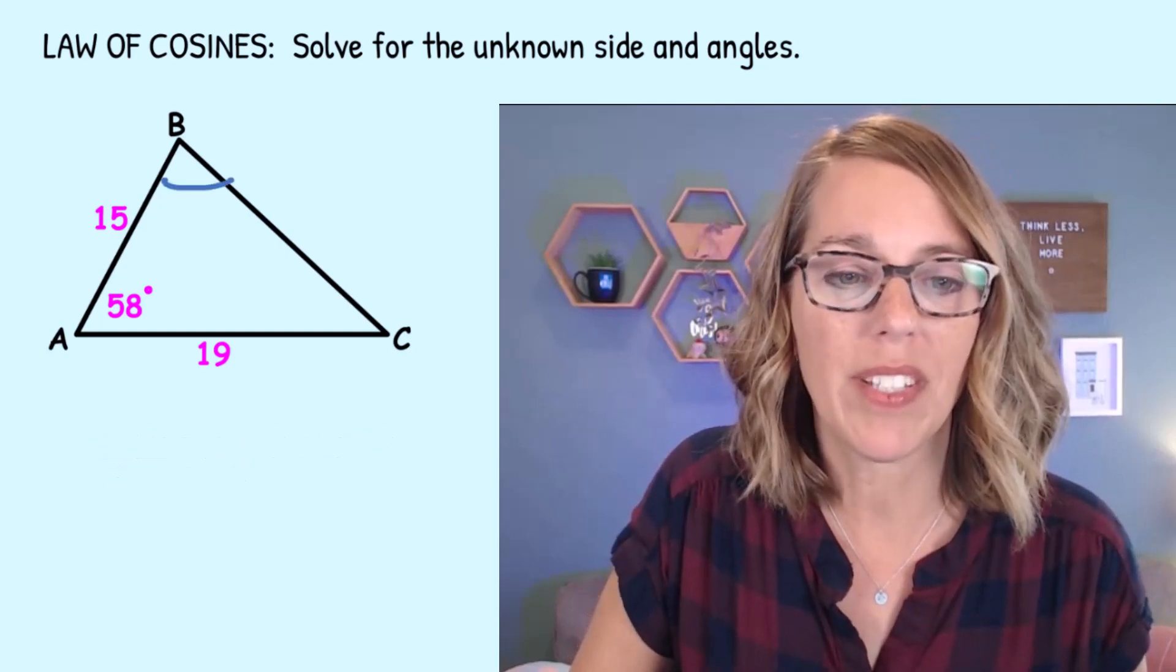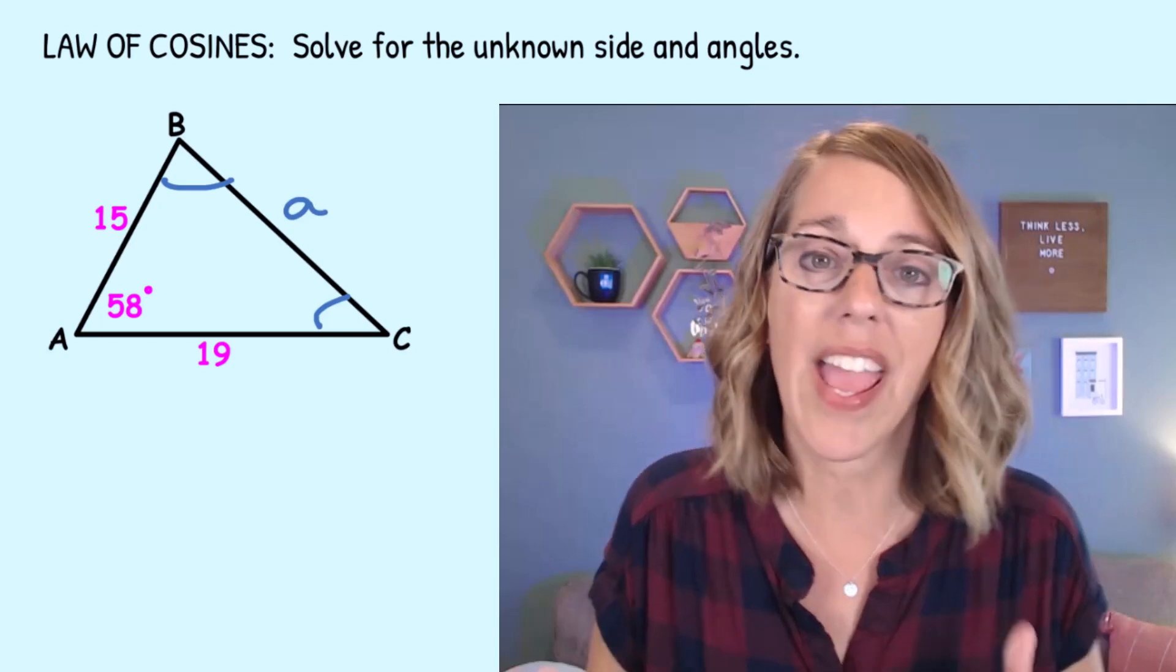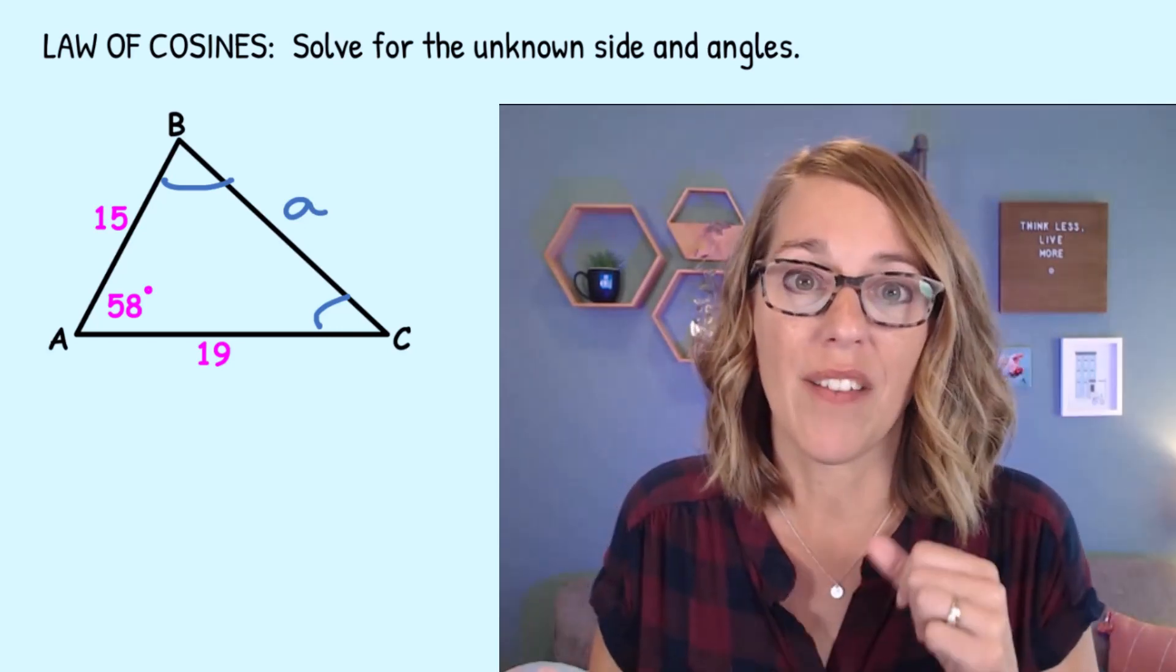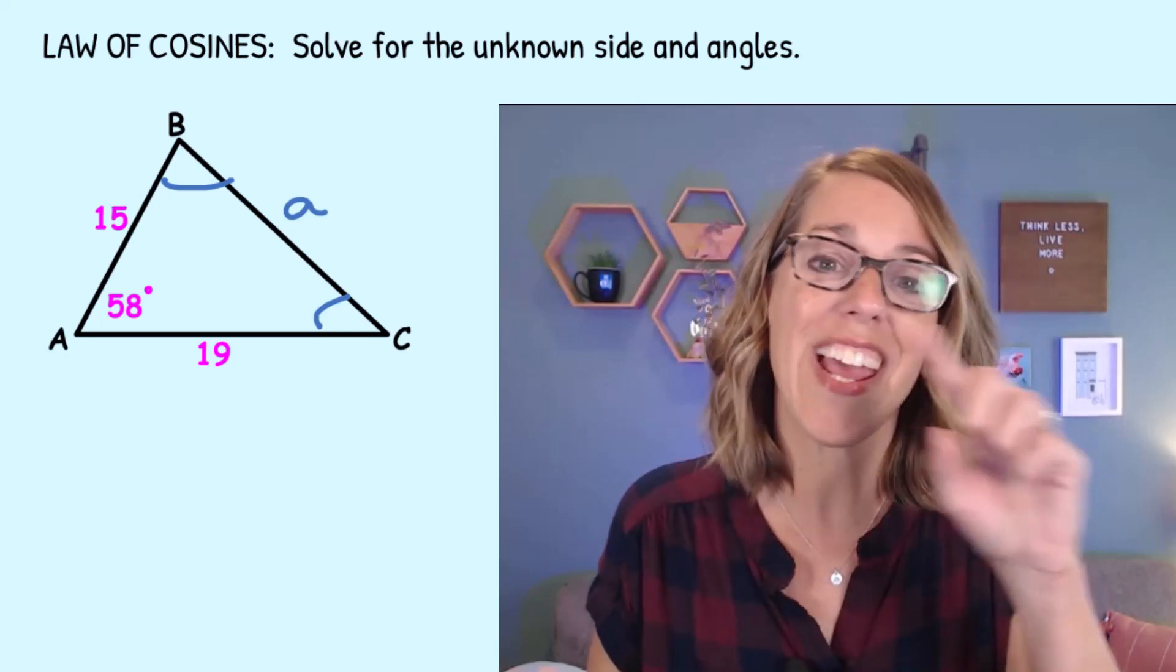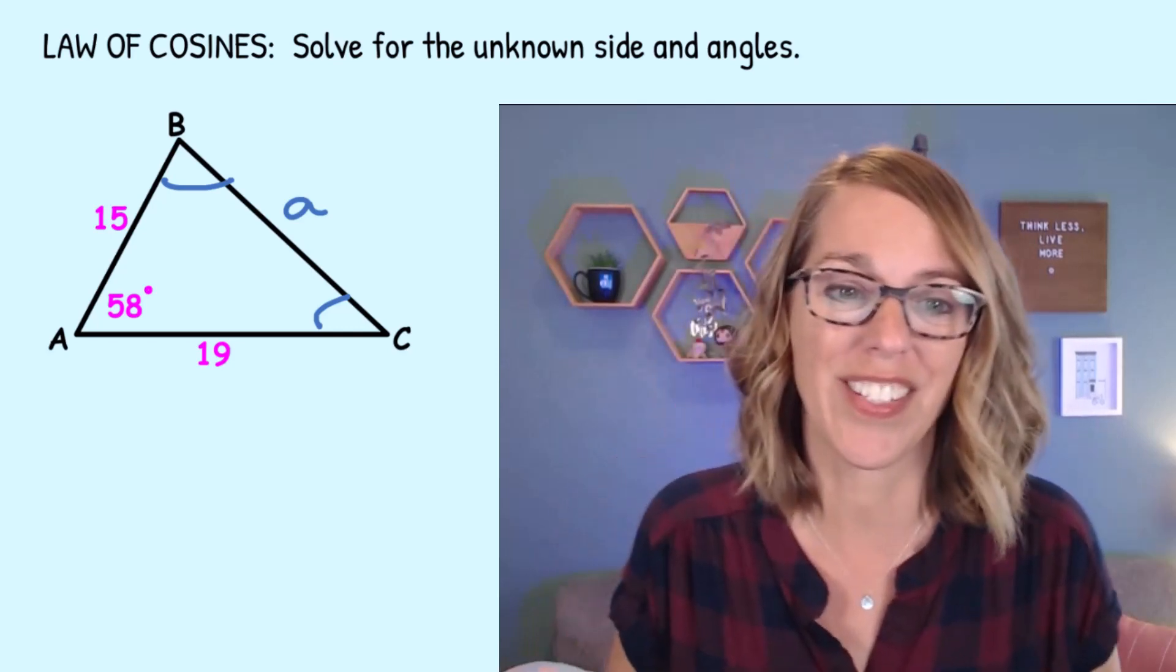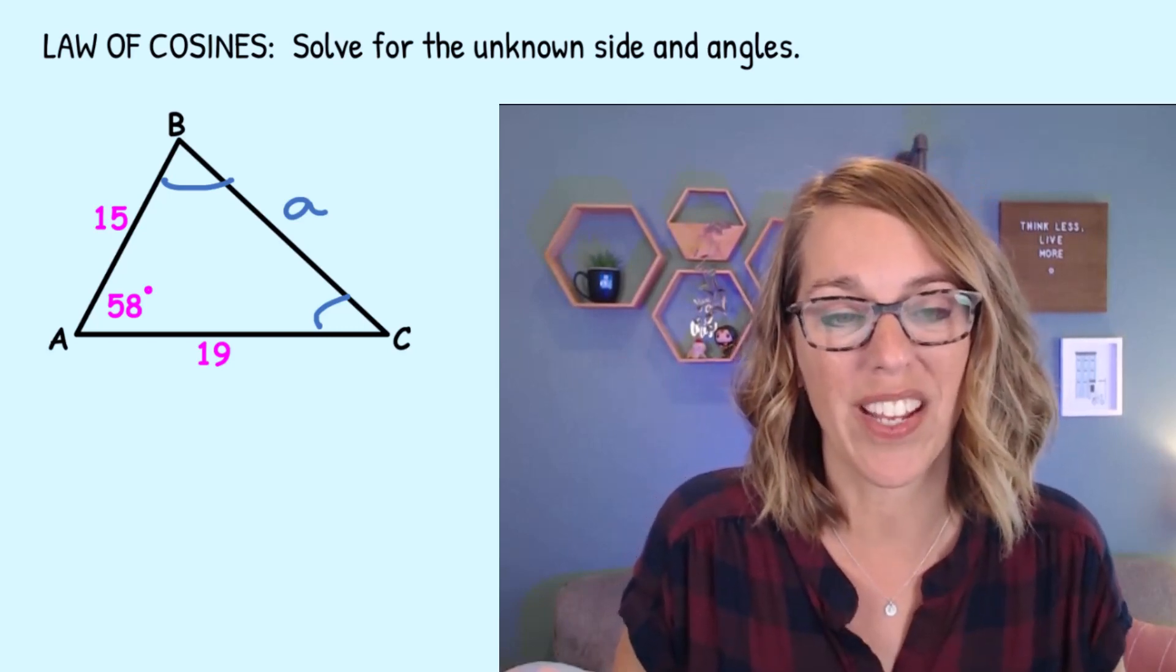This triangle is missing two angles and the side in between, which is going to be side A. We're going to use the law of cosines to solve this one. We're also going to use the law of sines and the fact that the sum of the triangles is equal to 180. But first we're going to need that law of cosines.